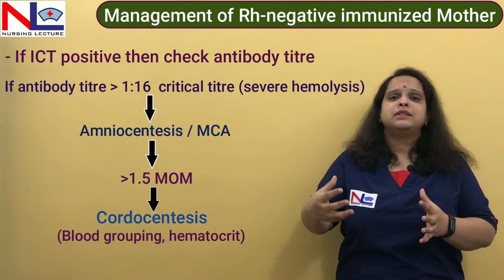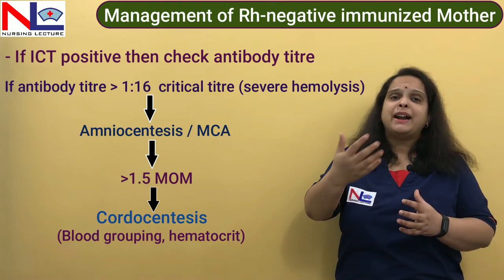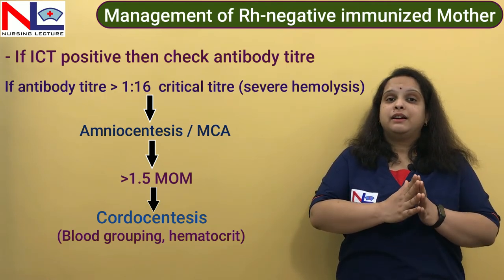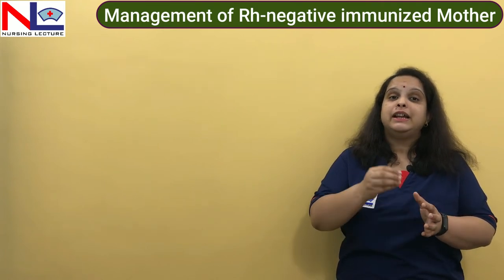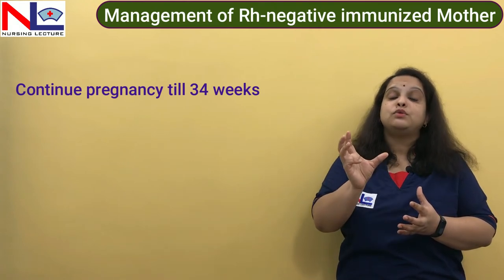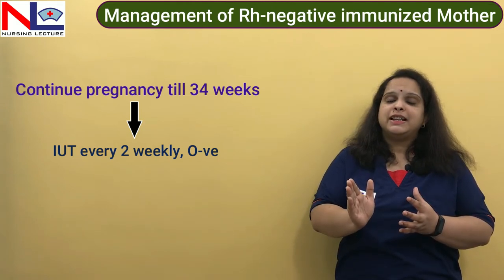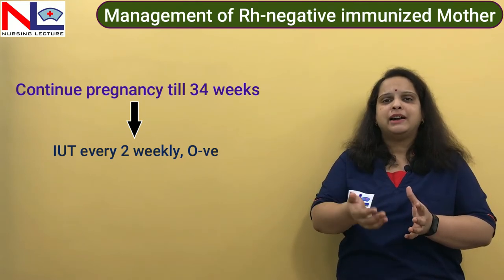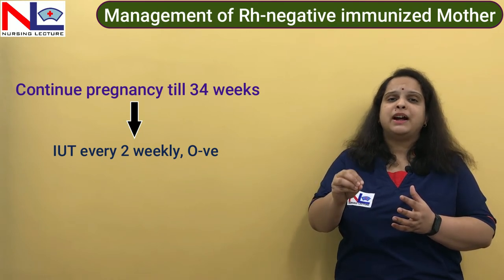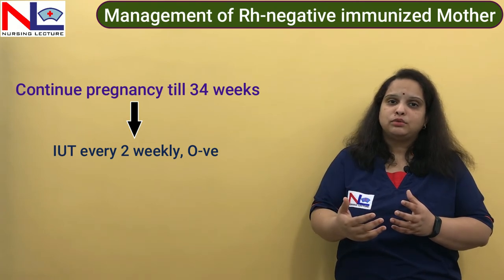Just as adults require blood transfusion, the fetus also requires transfusion to replace the destroyed RBCs. Using cordocentesis with ultrasound guidance, blood is transfused intravascularly into the umbilical vein. The blood used must be O-negative, as it carries no antigens that would trigger antibody formation. Alternatively, blood can be transfused intraperitoneally into the peritoneal cavity, depending on the available facilities and trained personnel.